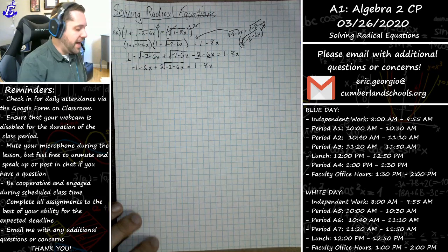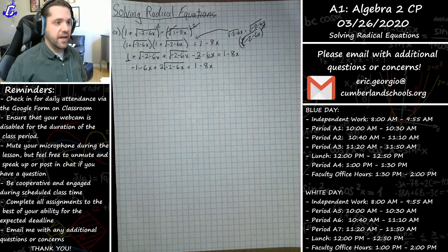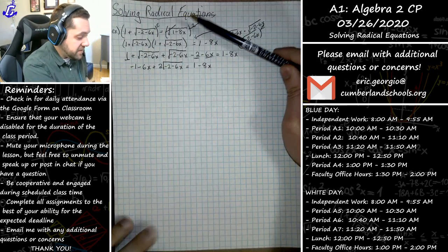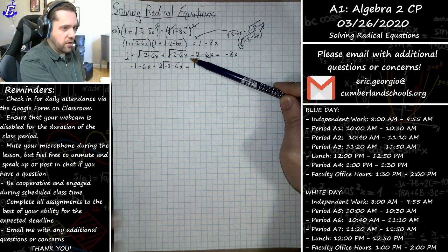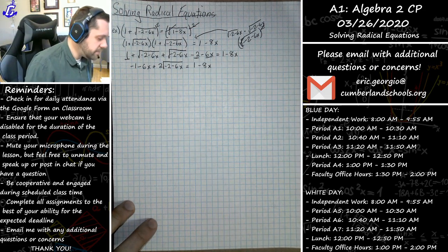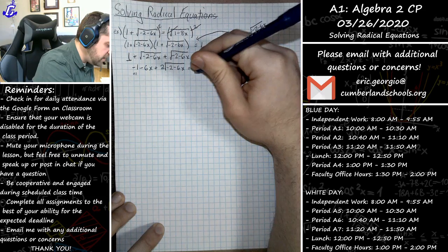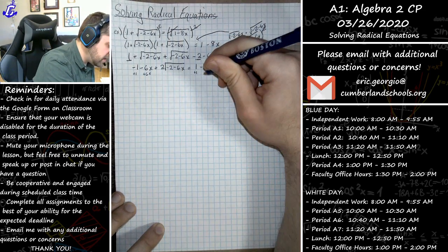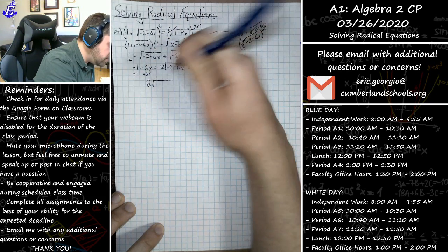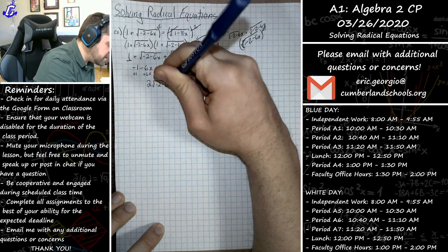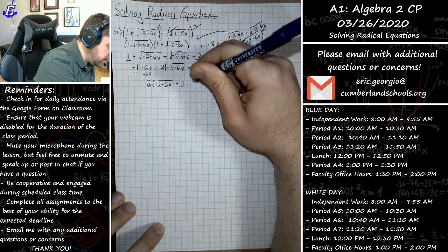Now that I have that, we can go ahead and isolate the radical and square both sides again. I've essentially reduced my two-radical problem down to a one-radical problem, just like we've seen before. I'm going to add the 1 over to the other side and add the 6x over to the other side, and I now have 2 times the square root of negative 2 minus 6x is equal to 2 minus 2x.